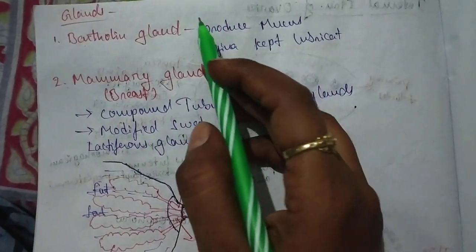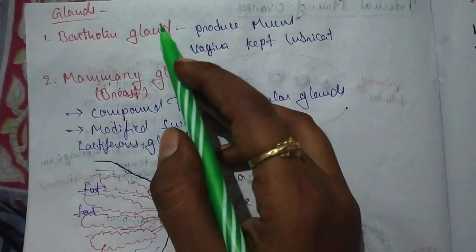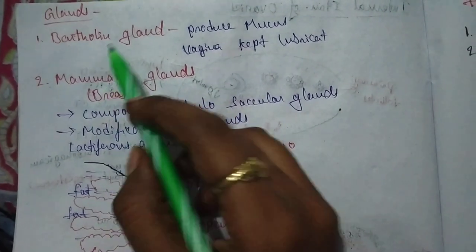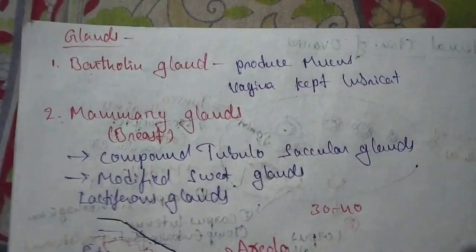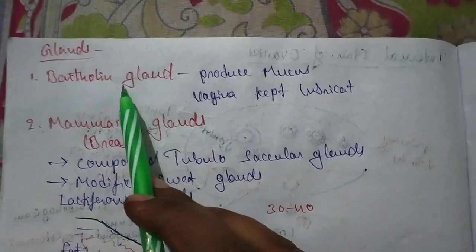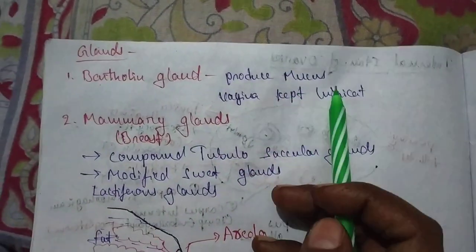What are the glands present in the female reproductive system? Bartholin glands, also known as bulbo-vestibular glands, produce mucus.